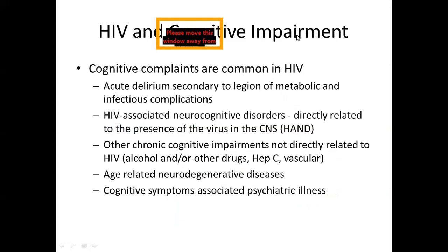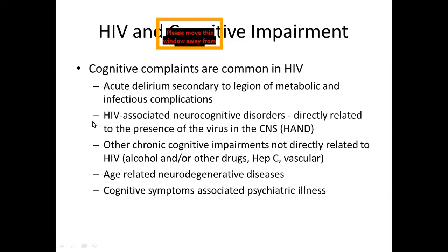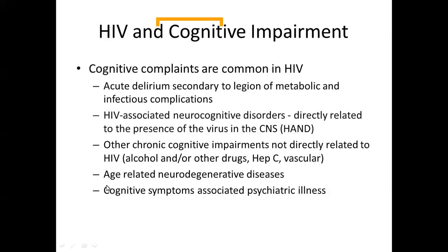Cognitive complaints are common in HIV. There can be acute delirium secondary to metabolic and infectious complications. HIV associated neurocognitive disorders are directly related to the presence of the virus in the CNS. There are also other chronic cognitive impairments not directly related to HIV, like alcohol and other drugs, hepatitis C, vascular impairments, and age-related neurodegenerative diseases. Because of effective ART, PLHIV are living longer lives, so early aging and age-related neurodegenerative diseases are also important causes of cognitive complaints.